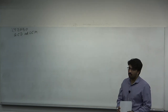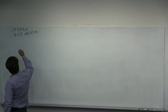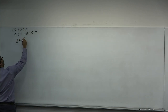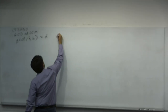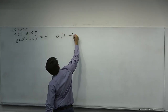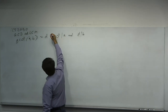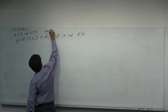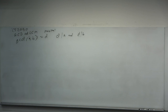The GCD of A and B is some number D such that D divides into A and D divides into B, and D is the maximum number to do so — it's maximal. D is the greatest common divisor: it is a number that is greatest and it is a divisor. So it's the greatest common divisor of both A and B.